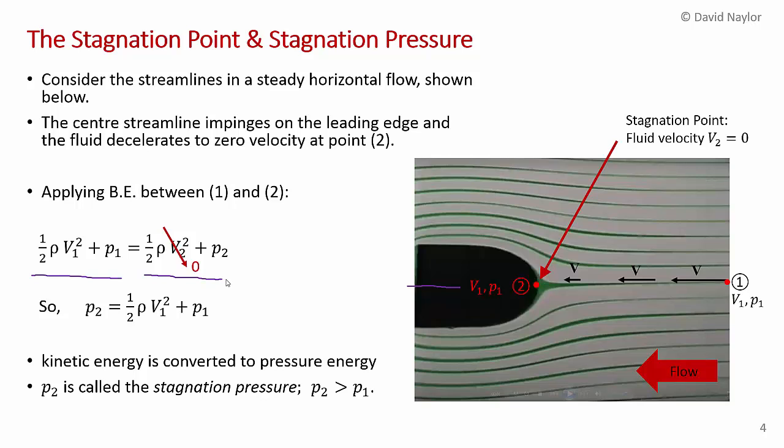So the kinetic energy plus the pressure at point 1 equals the dynamic pressure plus the static pressure at point 2. But as I just discussed, the velocity at point 2 is zero, so we get, we solve for p2, we get that p2 equals p1 plus this dynamic pressure, 1 half rho v squared.